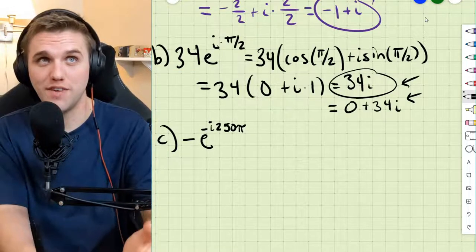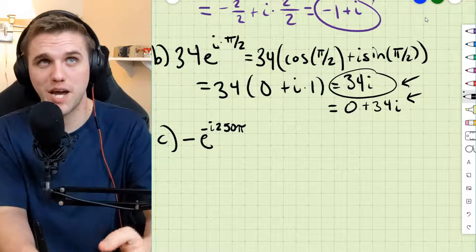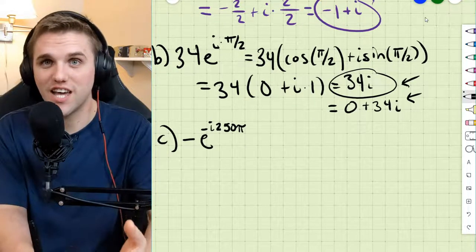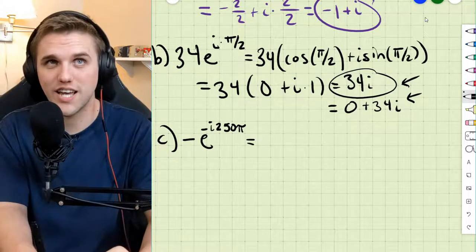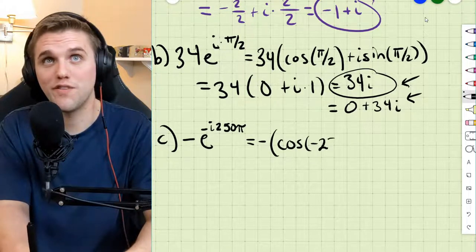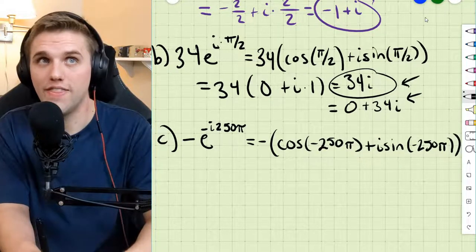All right, up next, we have negative e raised to the power of negative i times 250 times π. But again, we're just going to use that definition of e^(iφ) to write this as negative cosine of negative 250π plus i sine of negative 250π. And then we simplify.